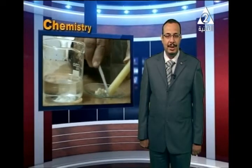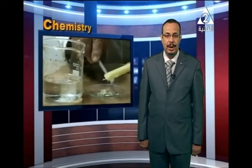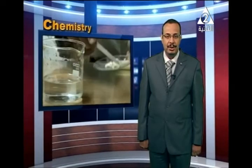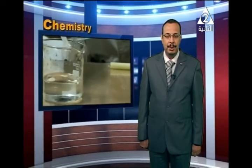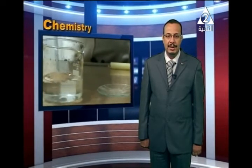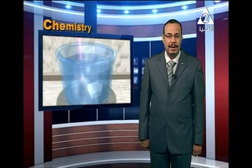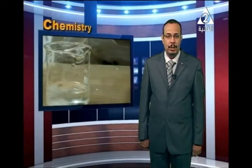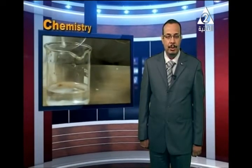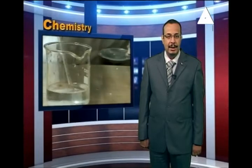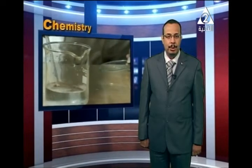Hello, my dear students. Today we are going to continue Chapter 3, which is chemical equilibrium. We are going to discuss ionic equilibrium and the different types of substances that conduct electric current, which are called electrolytes and non-electrolytes, and we are going to show experiments about the conduction of electric current and discuss some problems on them.